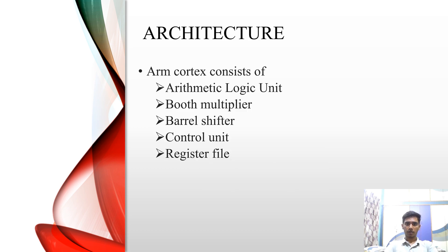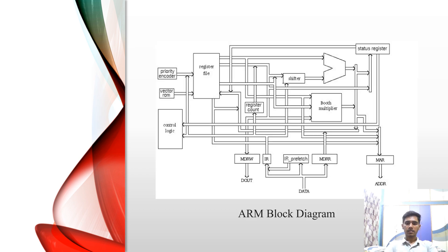Moving on to the architecture of ARM Cortex, the ARM Cortex consists of arithmetic logic unit, Booth multiplier, barrel shifter, control unit and register files. This is the block diagram of ARM processor where you can see register files, status registers, shifters, Booth multipliers, memory address registers, instruction registers and memory data registers. And there is priority encoder and controller logic, register file etc.